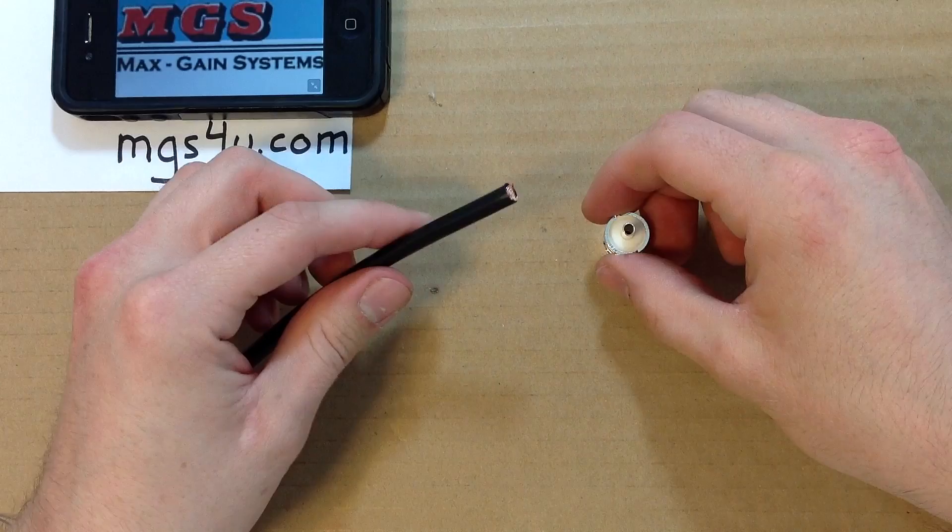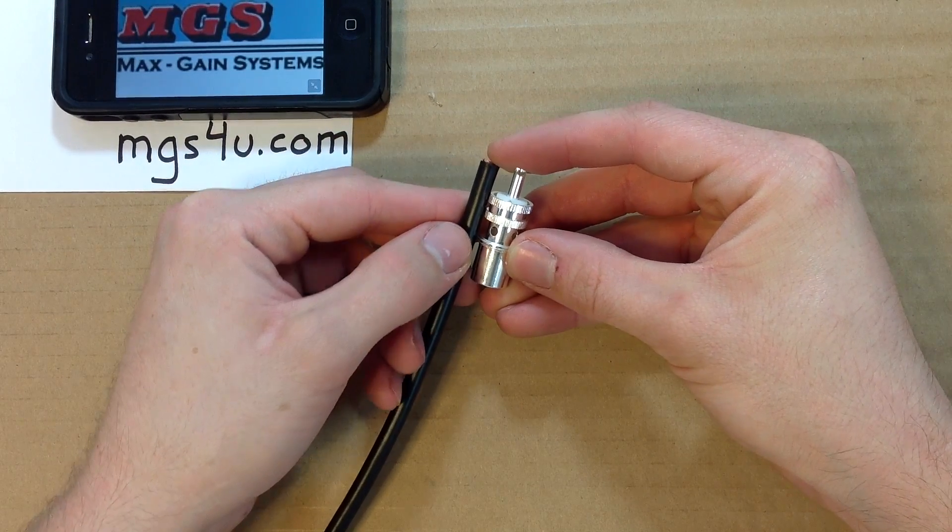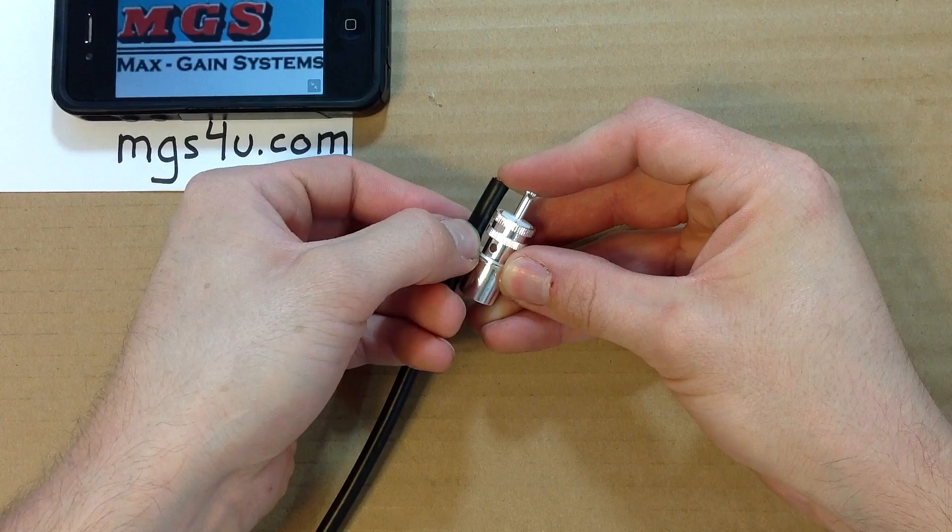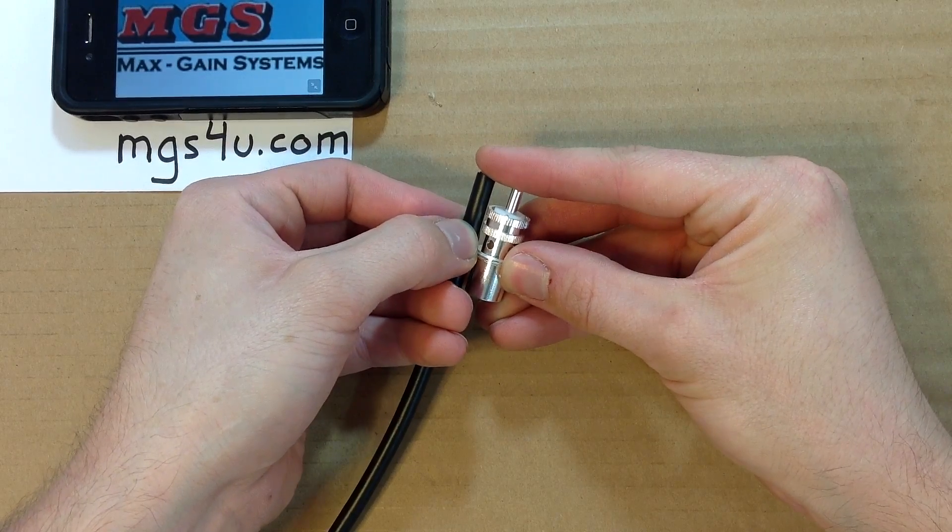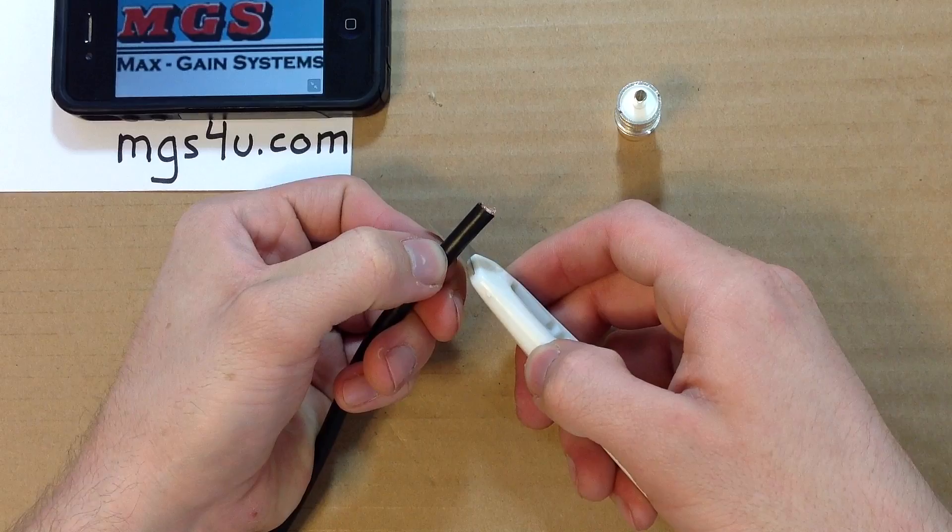Grab the main body and line up the center pin with the end of the coax. Place a mark or just use your thumbnail to mark where to cut the black jacket of the coax just below the second knurled ring but above the solder holes.